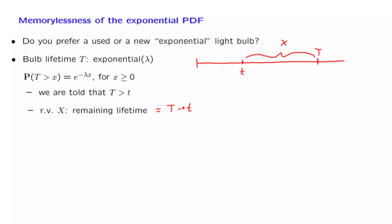Let us now calculate the probability that the light bulb lasts for another little x time units. That is, that this random variable capital X is at least as large as some little x. That is, that the light bulb remains alive until time T plus x.